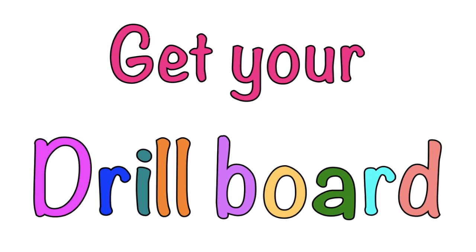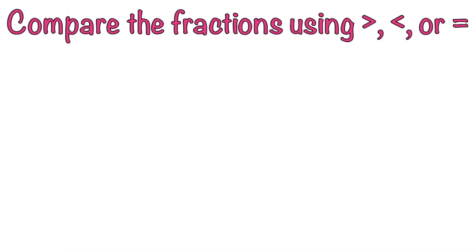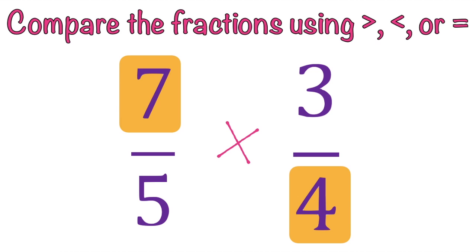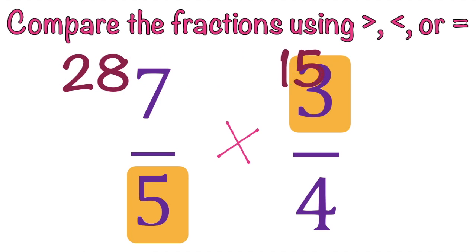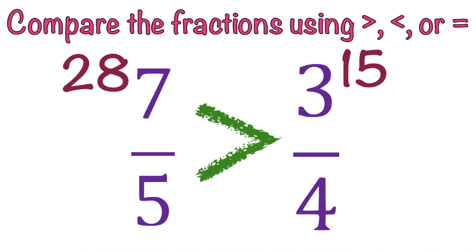Get your drill board. Using your drill board, I want you to compare the fractions using greater than, less than, or equal symbol. Let's have the first number: 7 fifths and 3 fourths. Write your answer on your drill board. Let's do it together. 4 times 7 equals 28, while 5 times 3 equals 15. Let's compare 28 and 15. The answer is greater than. So, 7 fifths is greater than 3 fourths.